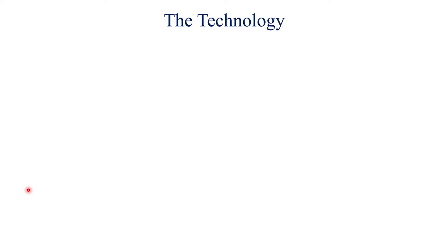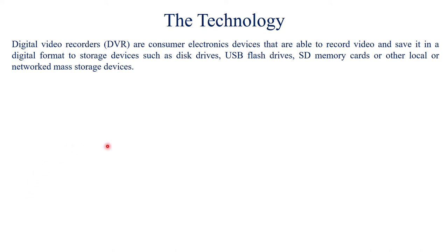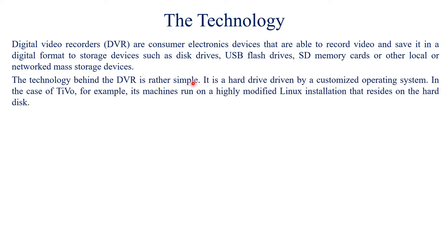DVRs are consumer electronic devices that are able to record video in a digital format to storage devices such as disk drives, USB flash drives, SD memory cards, or other local or network mass storage devices. The technology behind the DVR is rather simple — it is a hard drive driven by a customized operating system. In the case of TiVo, for example, its machines run on a highly modified Linux installation that resides on the hard disk.